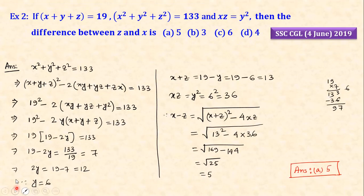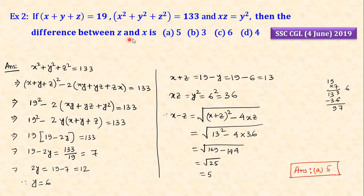If x plus y plus z equals 19, x² plus y² plus z² equals 133, and xy equals y², xz equals y², then what is the difference between z and x — that is, z minus x or x minus z? We need to find this difference. Looking at x² plus y² plus z² equals 133, we apply the formula: x plus y plus z whole square minus 2(xy + yz + zx).